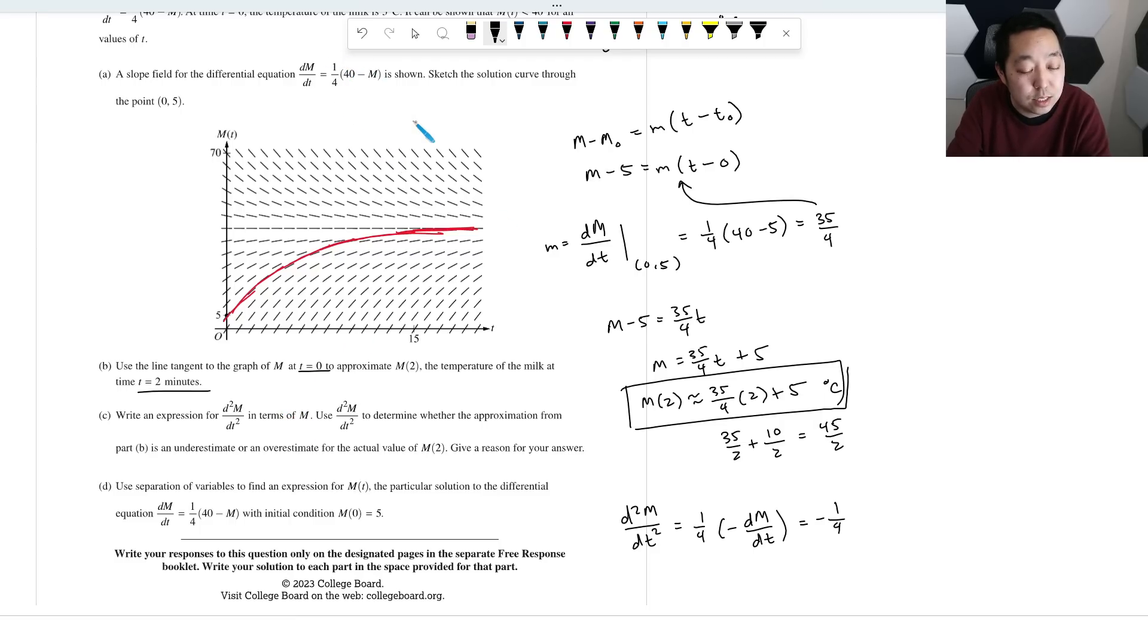So that's negative one fourth and they want it in terms of M. And you know, that dM/dT is this thing here. So you just replace dM/dT with this expression. So that's going to be one quarter times 40 minus M. Right. And I brought that negative sign out, right? That negative sign popped out. And then the dM/dT is just that. So it's negative one over 16, 40 minus M.